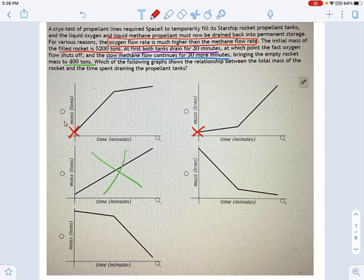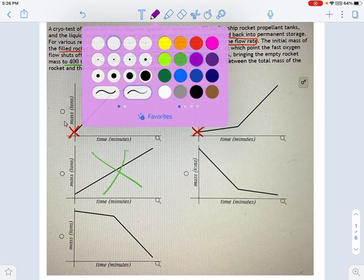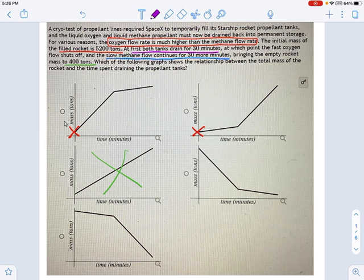And the other thing it tells me is that both tanks drain for 30 minutes initially. Meaning I start off draining very, very fast and losing a lot of mass. And then later on, halfway through, it switches to slow flow methane only. So, this is your fast section of the graph. And here's your slow methane only after the oxygen is done draining. This is the graph we're looking at.